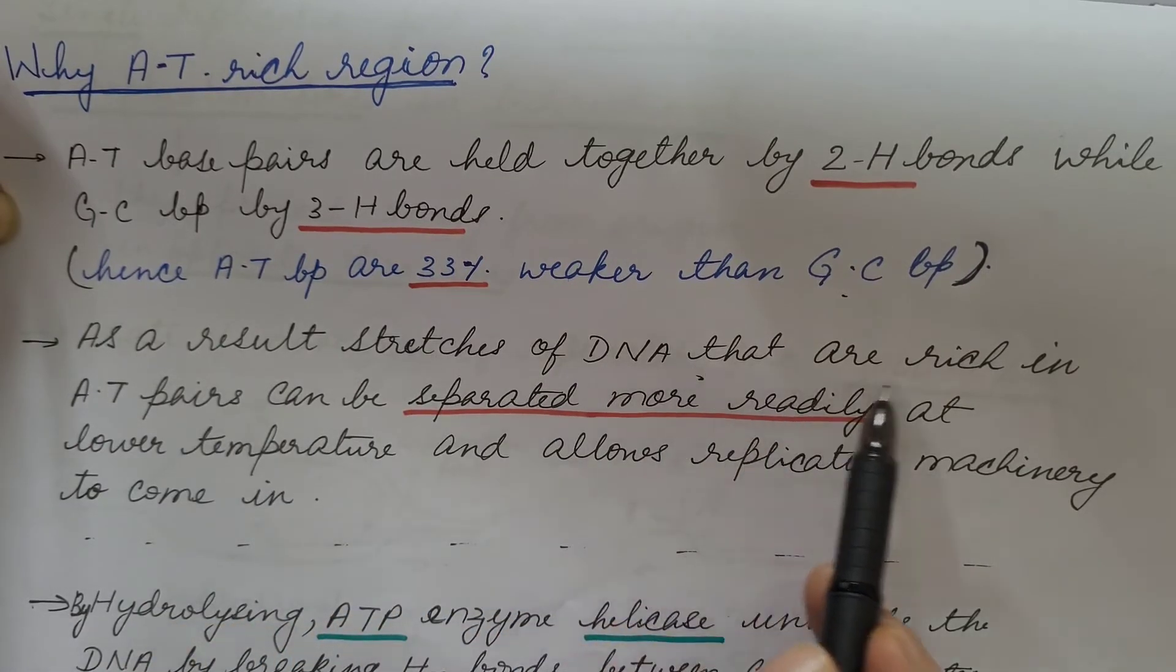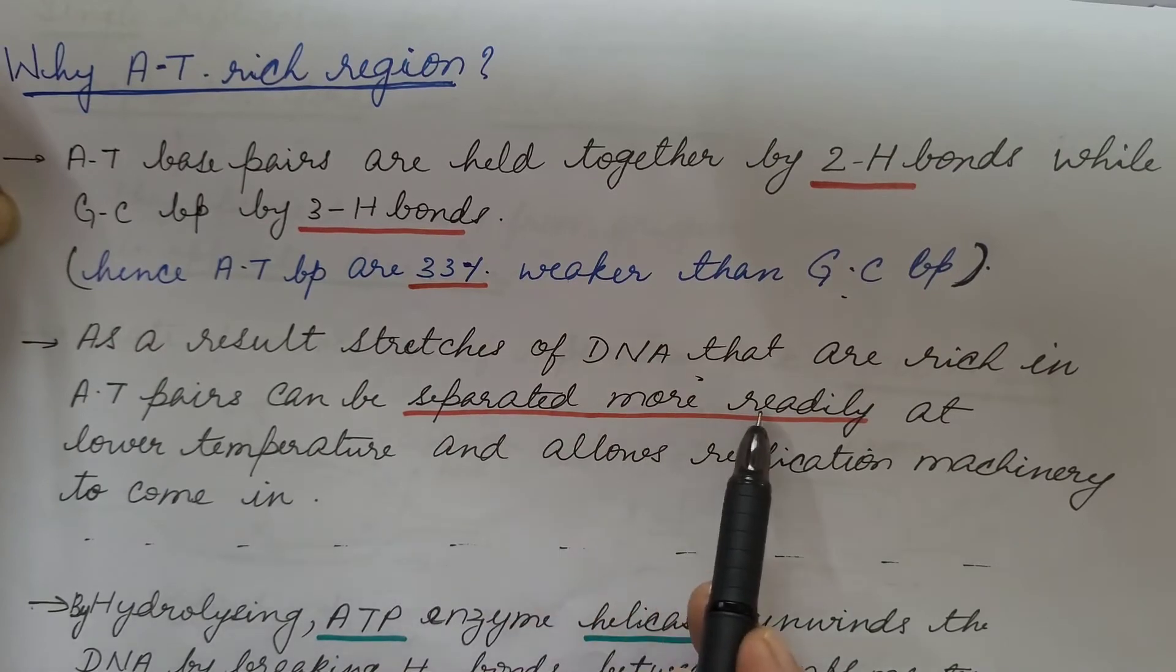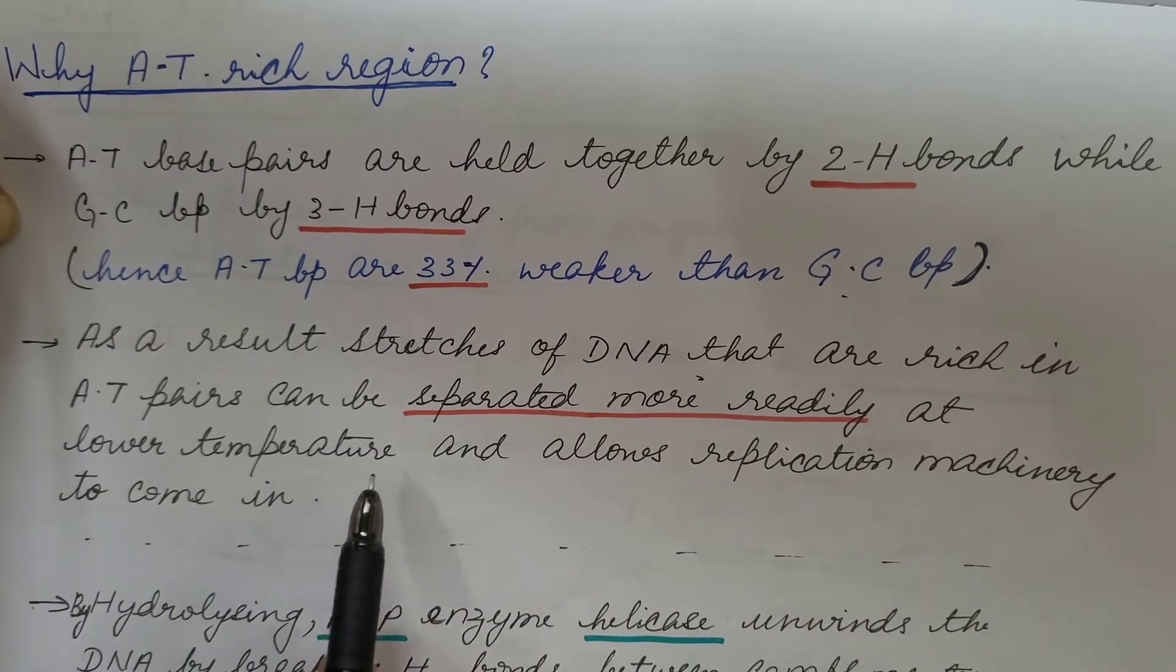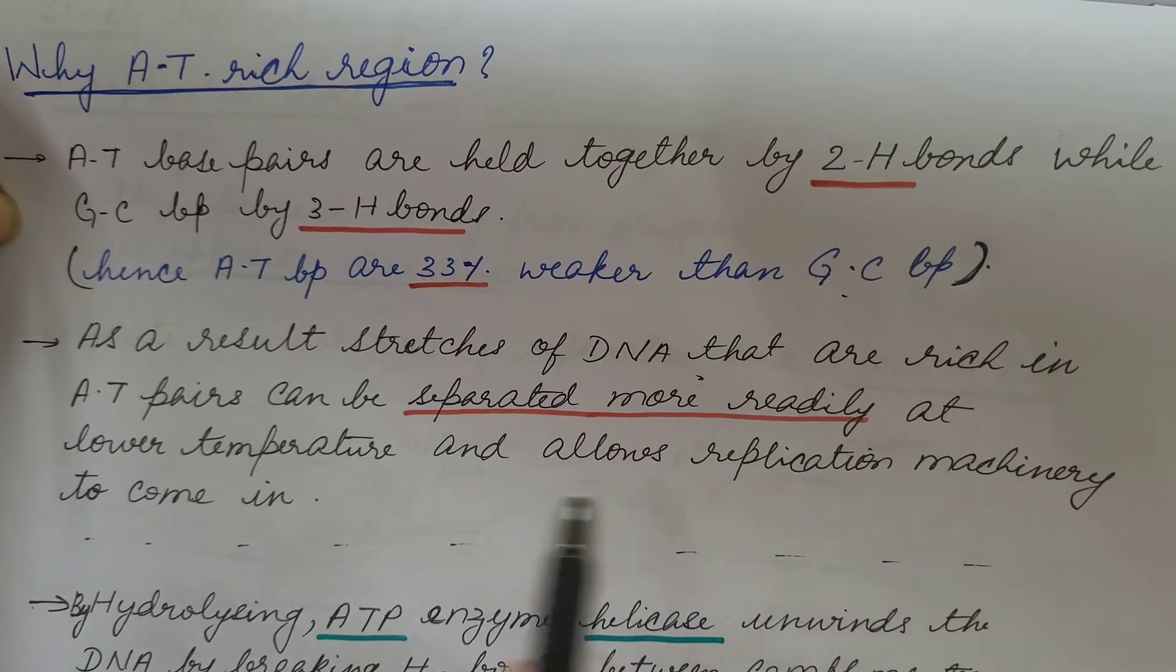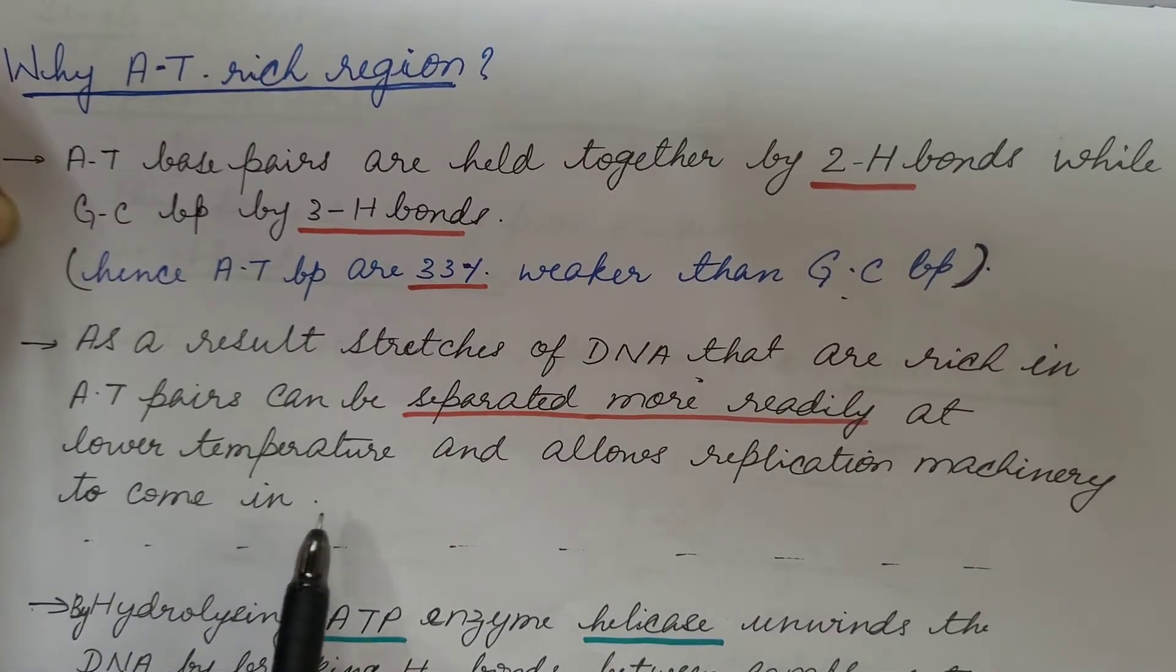As a result, stretches of DNA that are rich in AT pairs can be separated more readily at lower temperature and allows replication machinery to come in or to enter.